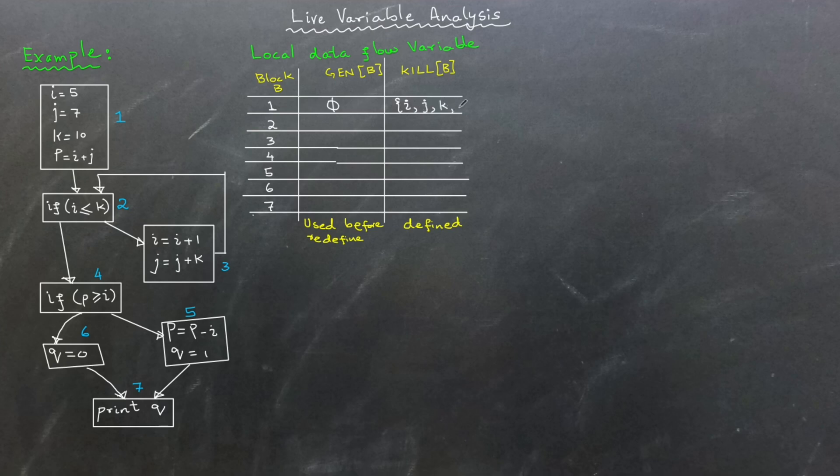Now, moving to block 2. Here the variables i and j are used before any redefinition occurs. So, we include i and j in gen 2. Since no variables are defined in block 2, kill 2 is an empty set. In block 3, the variables i, j and k are used before redefined. So, they are included in gen 3 set. Additionally, i and j are defined in this block. So, they are added in kill 3.